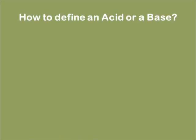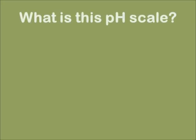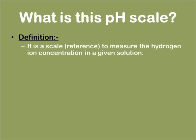Now, how do we define whether a given substance is an acid or a base? For this, we need something known as a pH scale. Now, what is this pH scale? The pH scale is a scale which is used to measure the hydrogen ion concentration in a given solution. The letter 'p' in the word pH actually means power.